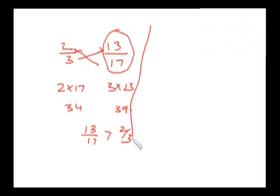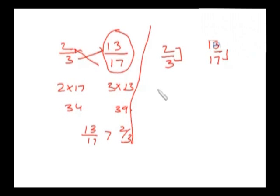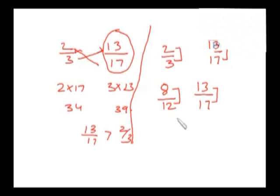Alternatively, I can solve this problem. I am writing 2 by 3 and 13 by 17. The difference between numerator and denominator here is 1 and here it is 4. So I can make this difference also 4 by multiplying the numerator and denominator by 4, giving 8 by 12. Now 8 by 12 is equivalent to 2 by 3. Since the difference is the same in both cases and 13 is higher than 8, 13 by 17 will be greater than 8 by 12.